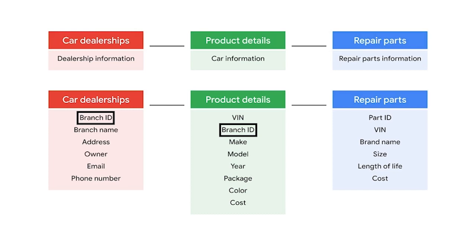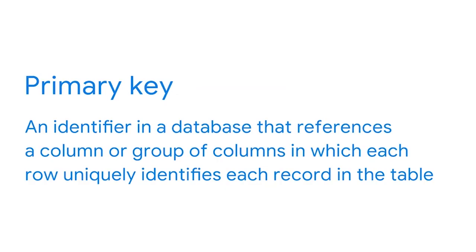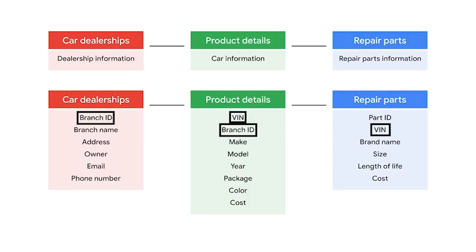A primary key is an identifier in a database that references a column or a group of columns in which each row uniquely identifies each record in the table. A foreign key is a field within a database table that is a primary key in another table. Primary keys from each table also appear as foreign keys in other tables, which builds those connections. A primary key can be used to impose constraints on the database that ensure data in a specific column is unique. Only one primary key can exist in a table, but a table may have many foreign keys.